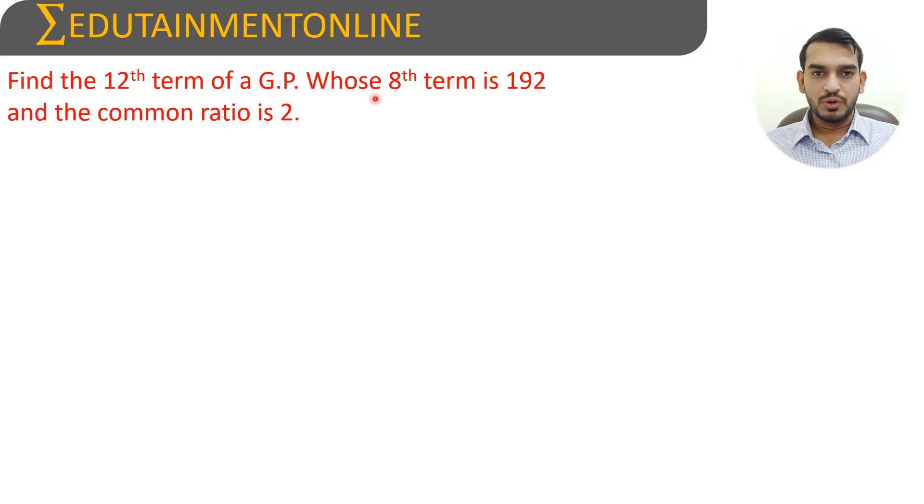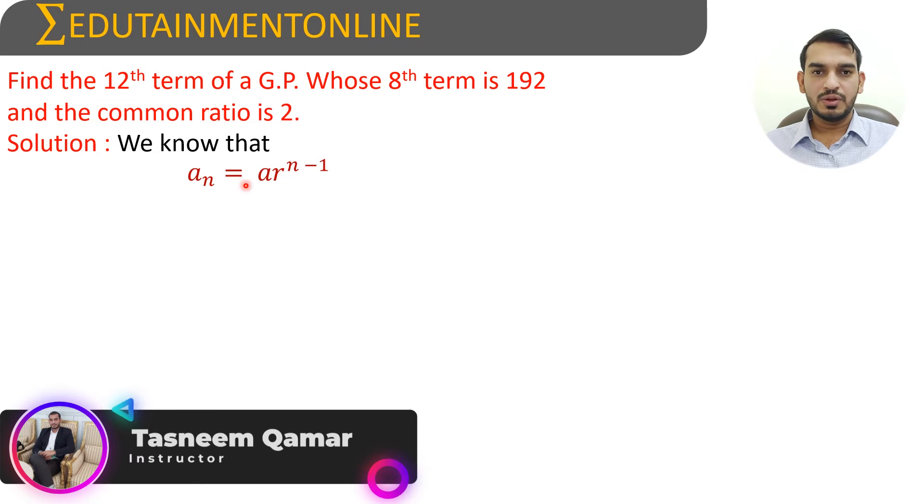Find the 12th term of the geometric progression whose 8th term is 192 and the common ratio is 2. We know that the nth term of the geometric progression is a_n equals a into r power n minus 1.